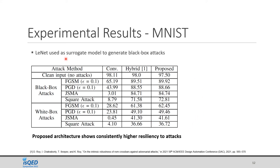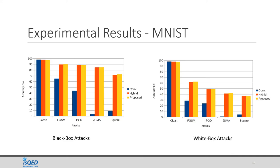For MNIST, all black box attacks are generated using the LeNet architecture, and white box attacks are generated using the same architecture being tested. The graph shows that white box attacks are more successful than black box attacks, but under every attack the accuracy of the proposed fully analog architecture is highest.